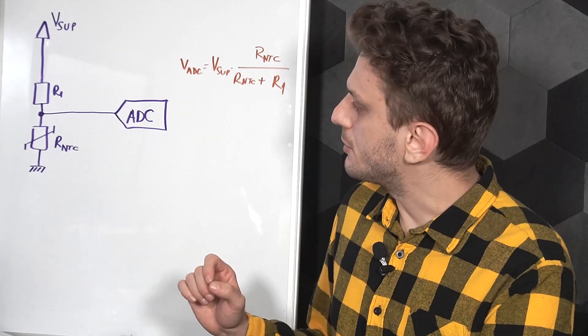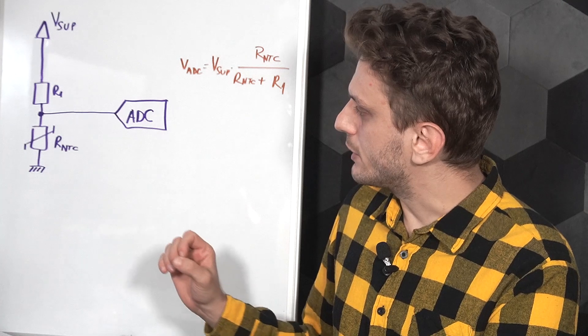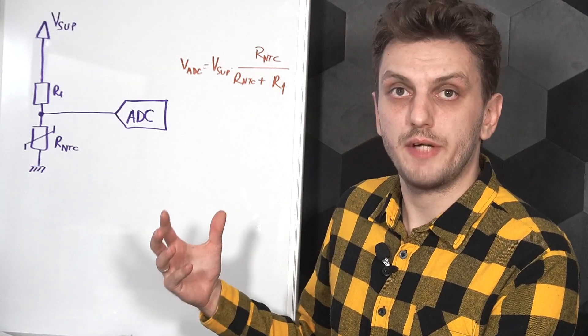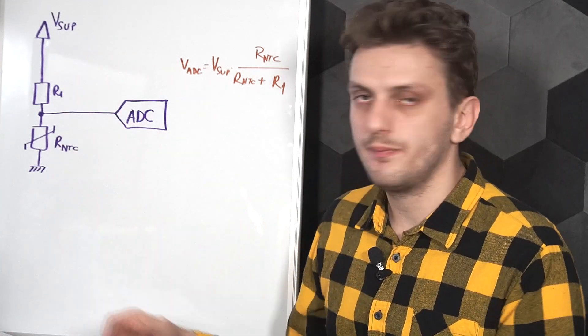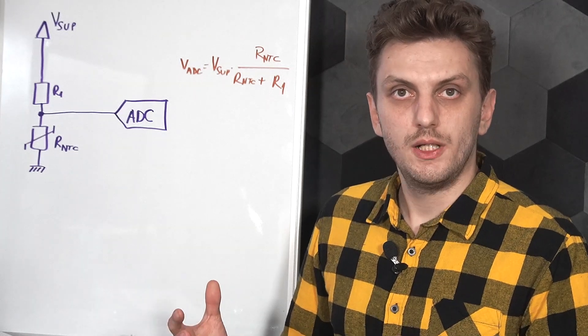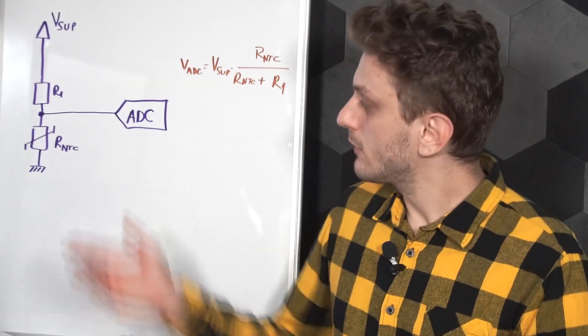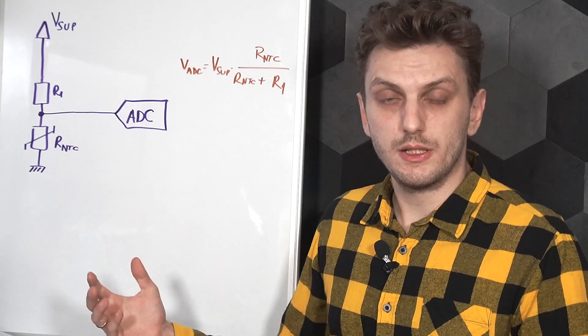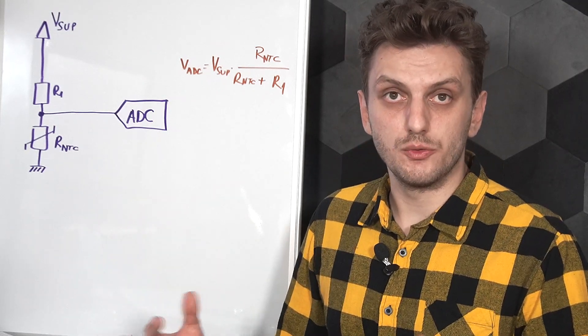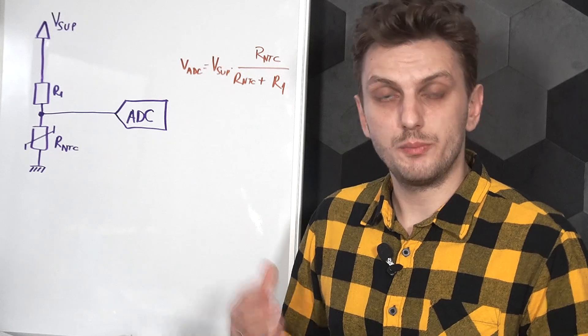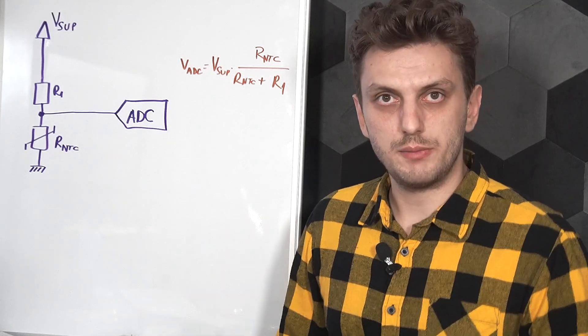But because of this arrangement, one of the problems that you can run into is caused by the fact that the current through the NTC is not very well controlled. The NTC after all is a resistor, so any current passing through it will heat it up, and because the NTC value varies so widely, compensating for this self-heating can be quite difficult.